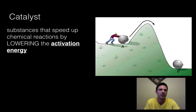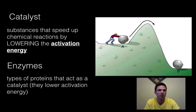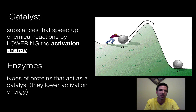That's the same thing as an enzyme. Enzymes are going to be types of proteins that do this — proteins that act as catalysts; they lower activation energy. The only real difference between the term catalyst and enzyme is that catalysts are any substance that lowers activation energy, but enzymes are specifically going to be proteins — the biological catalysts — proteins that speed up reactions by lowering activation energy.